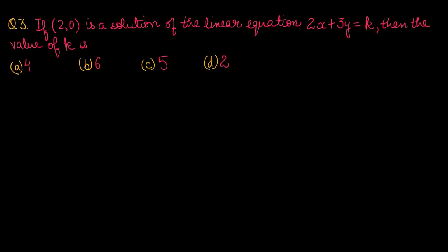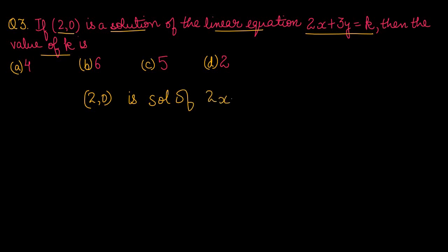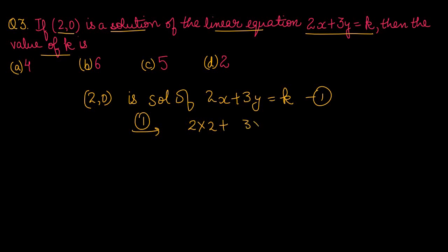Question number 3: if (2, 0) is a solution of the linear equation 2x plus 3y equals to k, then the value of k is? (2, 0) इस linear equation को satisfy करेगा। First equation में x=2 और y=0 fit out करने पर: 2 into 2 plus 3 into 0 equals to k, यानी 4 plus 0 equals to k, तो k की value equals to 4 आगई।